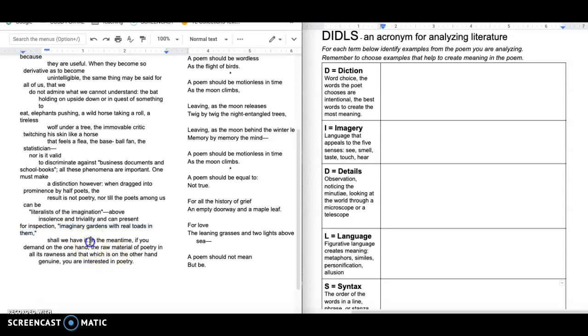And then another shift in the meantime. So between disliking it and waiting for someone to do it well, she says, If you demand on the one hand the raw material of poetry in all its rawness and that which is on the other hand genuine, you're interested in poetry. So I think what she's saying here is good poetry is real and raw and genuine and people get it when it is that.